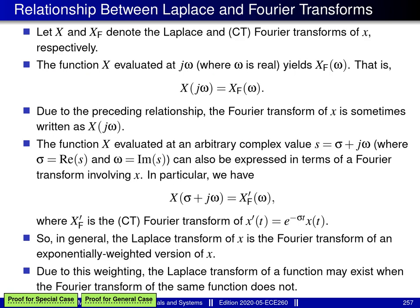The Laplace transform can be thought of as a generalization of the classical Fourier transform, in the sense that the classical Fourier transform can be obtained as a special case of the Laplace transform. Let X and X_F denote the Laplace and continuous time Fourier transforms of x respectively. The function X evaluated at jω — a point on the imaginary axis — yields X_F(ω).